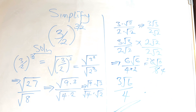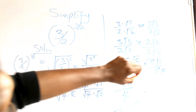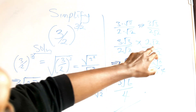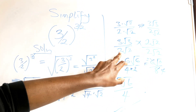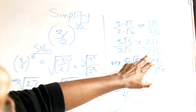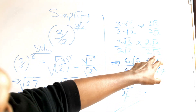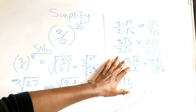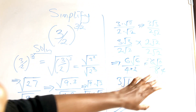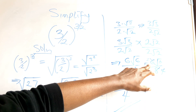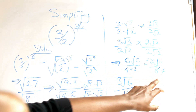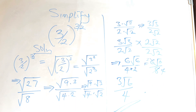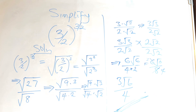To recap: 3 root 3 times 2 root 2 — 3 times 2 is 6, root 3 times root 2 is root 6. All over: 2 root 2 times 2 root 2 — multiply 2 times 2 is 4, root 2 times root 2 is 2, so 4 times 2 is 8. That gives 6 root 6 over 8. Dividing both by 2 gives 3 root 6 over 4. This is your final answer. You cannot simplify further. You can see it's a simple question, though it looks complex.